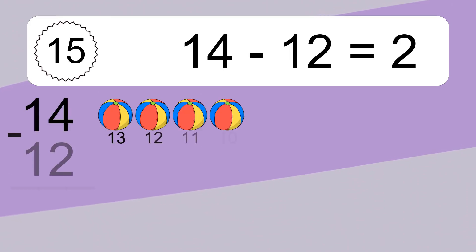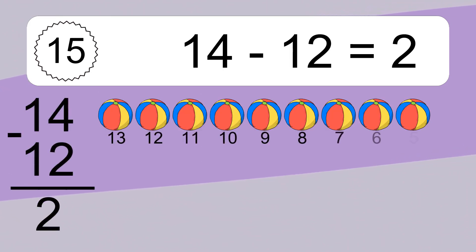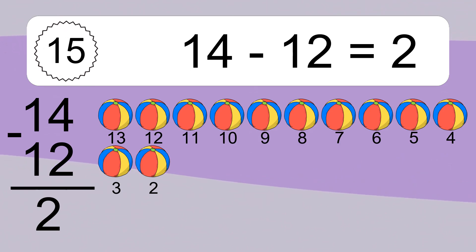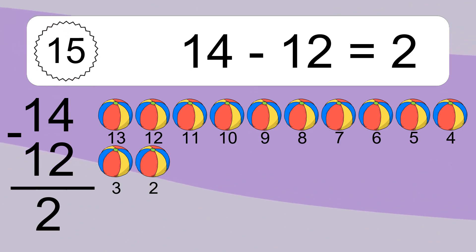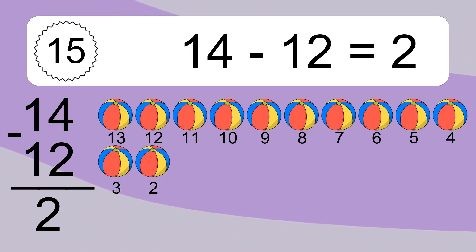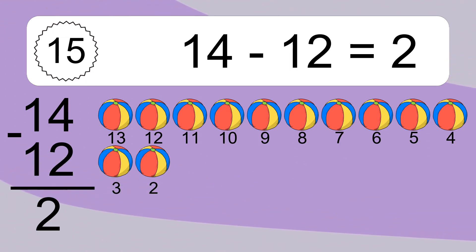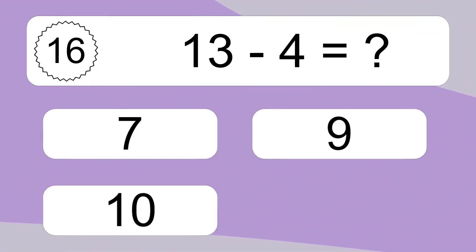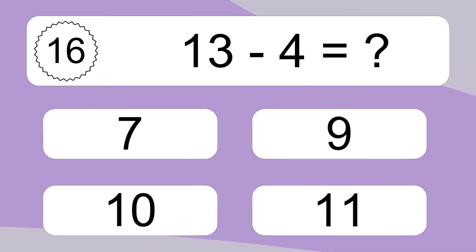14 minus 12 equals what? 14 minus 12 equals 2. Let's count it: 13, 12, 11, 10, 9, 8, 7, 6, 5, 4, 3, 2.